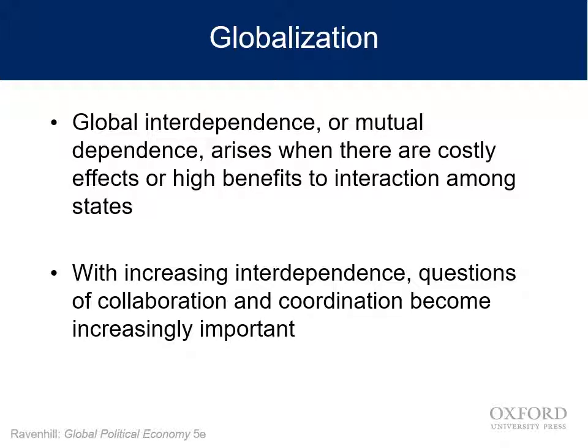Another example: if you make cars in Japan and sell them in the United States, that's international trade, but that's not the way it works anymore. You make parts of cars in Japan, Korea, Mexico, Brazil, and the United States and ship them around. Work is done in different countries on different parts of the product. At that point, we've gone beyond just moving goods from one nation to another to producing them in a whole bunch of places — that seems more global.